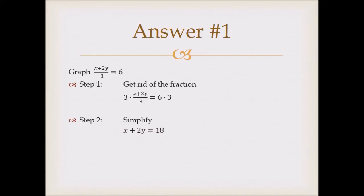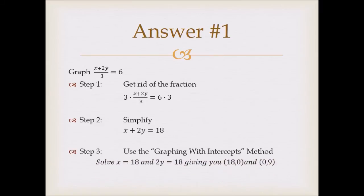Now, this should look familiar. It is the intercept method. So we're going to use the graphing with intercepts method. So cover up each variable, and you're going to get two intercepts, which are at 18, 0 and 0, 9. So then plot those two points and graph the line. Just as easy as that.